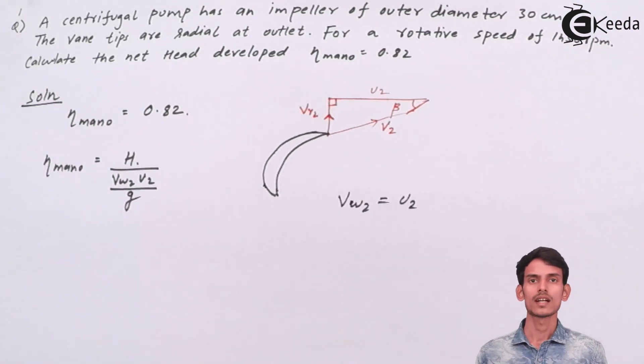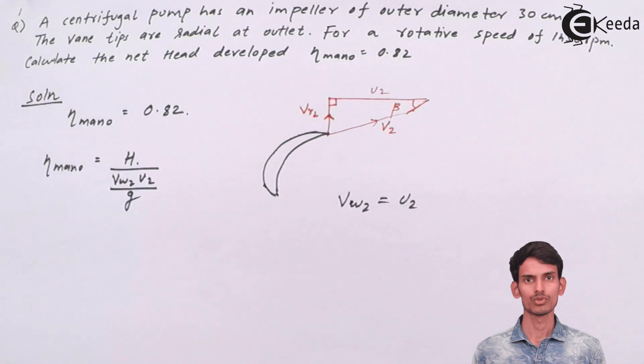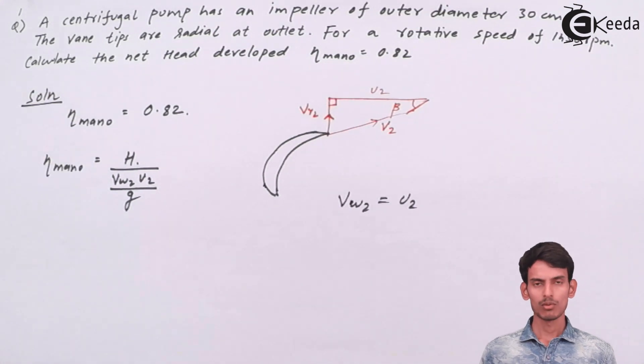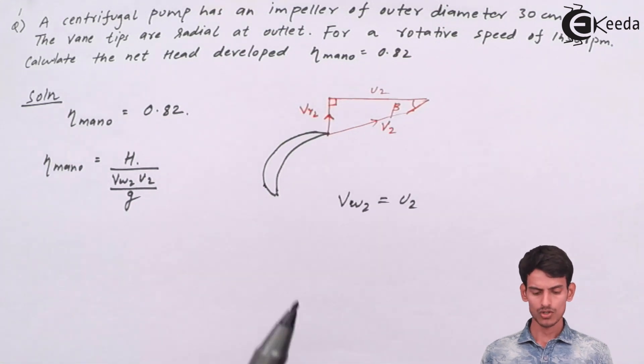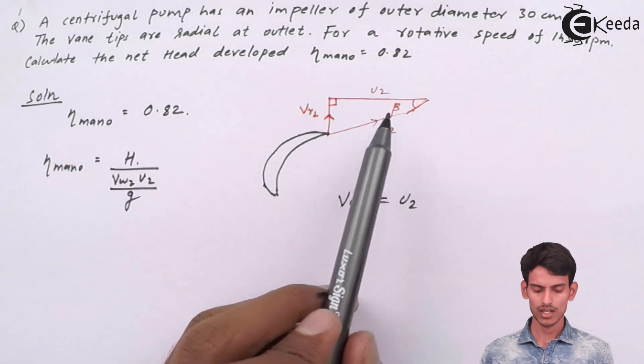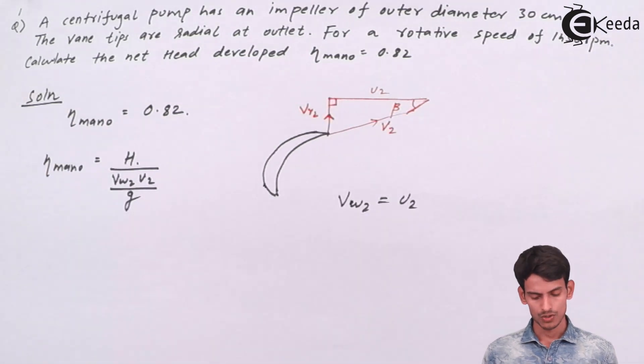So it is very important to understand why VW2 is equal to U2. Because VW2, that is the wall component, is nothing but the horizontal component of the absolute velocity. So if you take the horizontal component of your absolute velocity, you will get U2 only. So if you know U2, you can get the value of VW2.